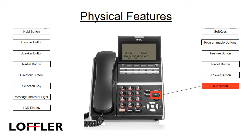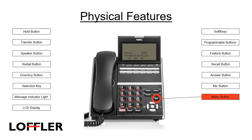The mic button allows you to turn on and off your microphone while being hands-free using a headset or speakerphone. Press the mic button to turn your mic on — the key will light up — and press the button again to turn your mic off. If the light is on, your mic is on; if the light is off, your mic is off. The menu button provides access to phone settings such as call history, directory, call functions, and different settings.